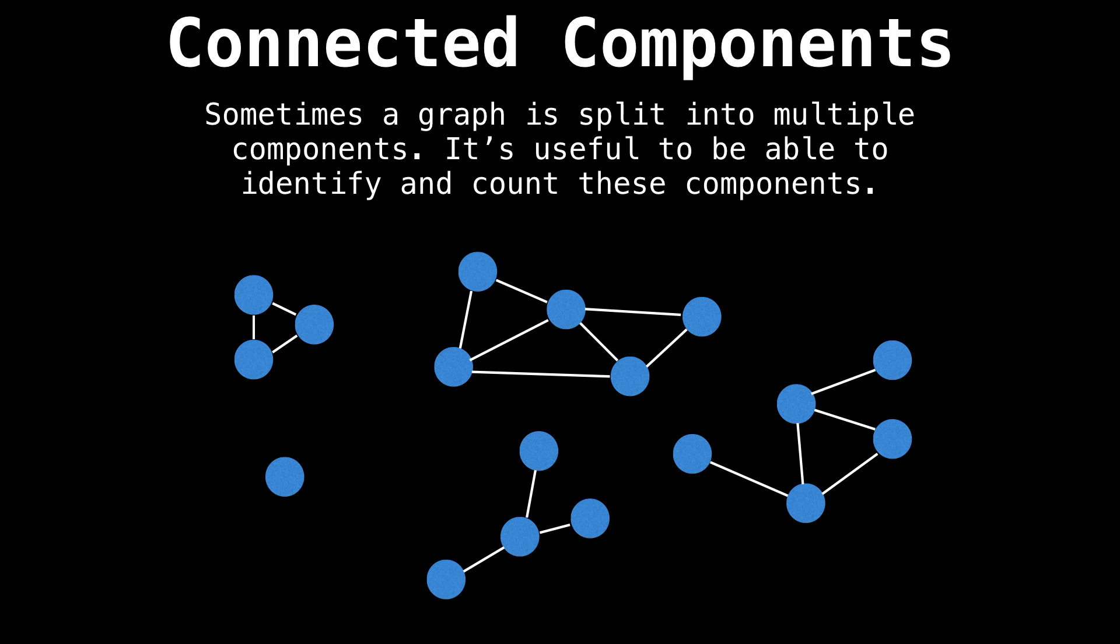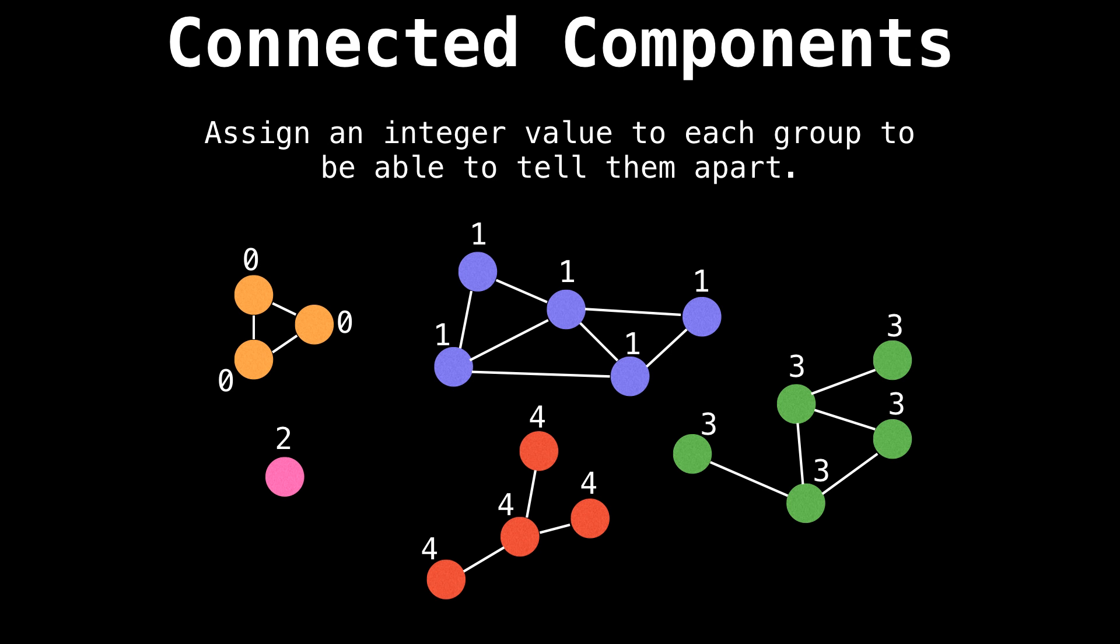Let's look at another simple use case for depth first search. I want to discuss finding connected components in a graph. First, let's understand what we mean by connected component. Sometimes the graph is split into multiple disjoint components and it's useful to be able to identify and count these components. One way to identify these components might be to color them so we can tell them apart. But what does coloring nodes really mean to a computer? Coloring nodes is equivalent to labeling each node in a component with the same ID value. For example, every node in the purple component gets an ID of one, and every node in a green component gets an ID of three.